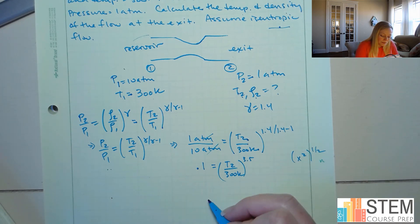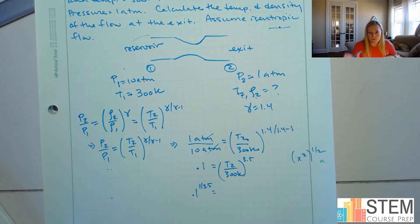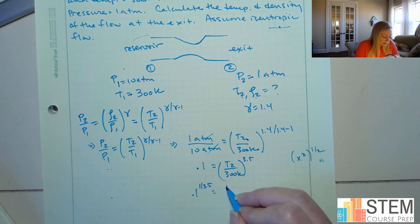So basically what we're going to do is we're going to have 0.1. We're going to raise that to the power of 1 over 3.5 because you've got to get rid of that 3.5. So just like you would take the square root of both sides, you're going to do the same thing here. So we'd have that, and then that's going to equal our T2 over 300.